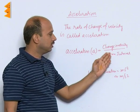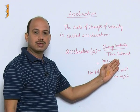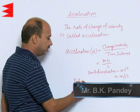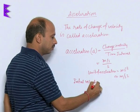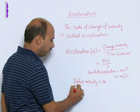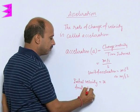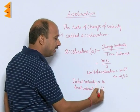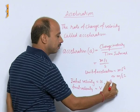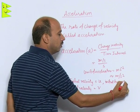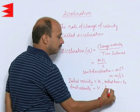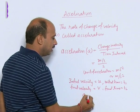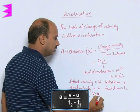Acceleration is equal to change in velocity upon time interval. Suppose initial velocity is u, final velocity is v, initial time is t1, and final time is t2. So you can write acceleration a is equal to v minus u upon t2 minus t1.